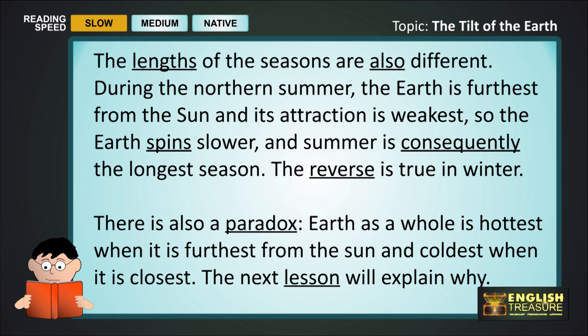There is also a paradox. Earth as a whole is hottest when it is furthest from the sun, and coldest when it is closest. The next lesson will explain why.